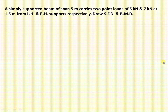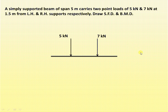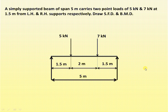In this video we'll understand how to draw the shear force and bending moment diagram for a simply supported beam carrying two point loads of 5 kilonewton and 7 kilonewton. The loads are positioned 1.5 meters from the left and right hand supports respectively. The total span length is 5 meters, so the middle span length is 2 meters.